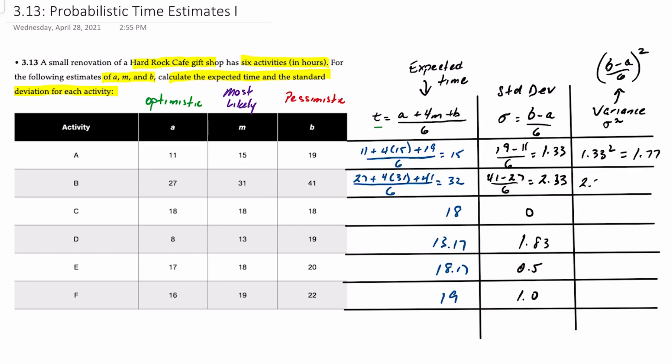Here we'll take 2.33 squared. This is 5.44. This is 0. Activity D, 3.36. Activity E, 0.25. And activity F, of course, is 1.0.